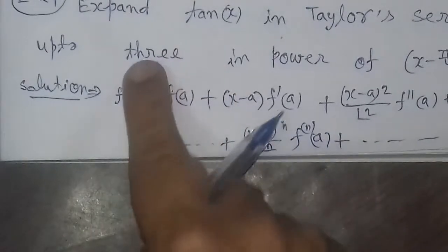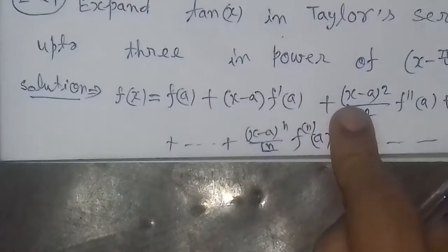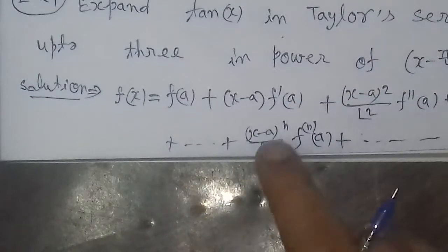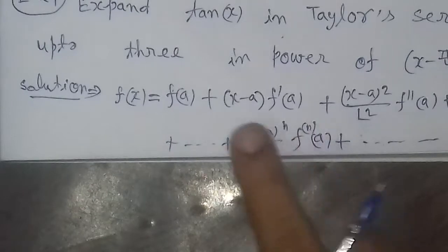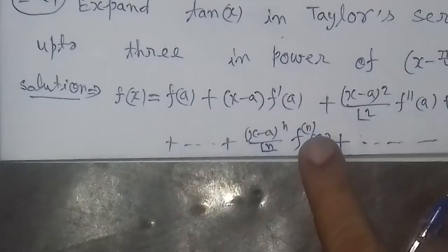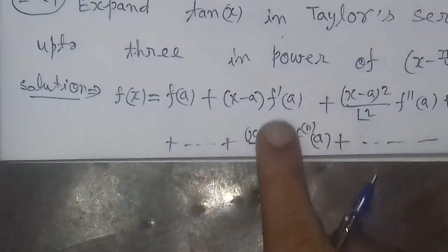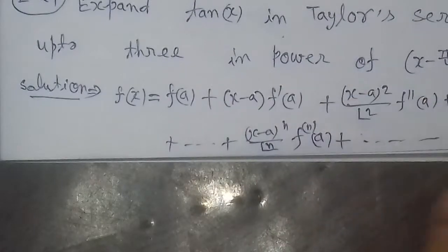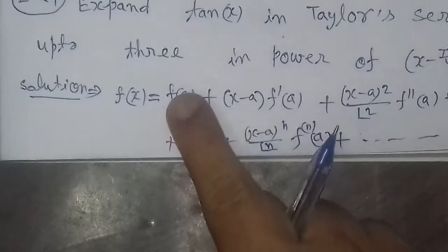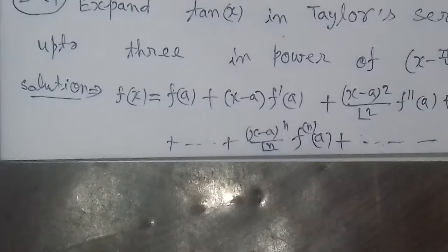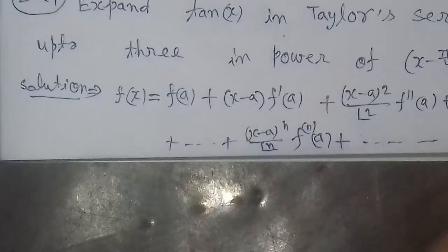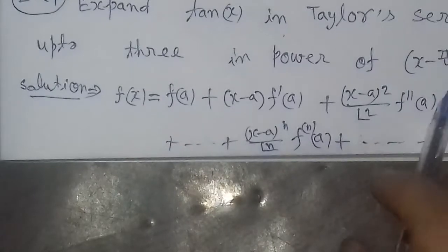Since we only need three terms, we need to find the values of the first three terms. We differentiate tan(x) accordingly. If more terms were needed, we would take more derivatives. If any term becomes zero, we stop; otherwise we continue writing more terms. Here, since we are expanding about x minus π/4, a equals π/4.